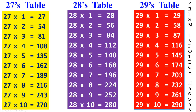29's table. 29, 1 times 29. 29, 2 times 58. 29, 3 times 87. 29, 4 times 116. 29, 5 times 145.